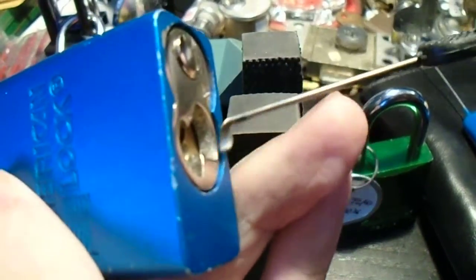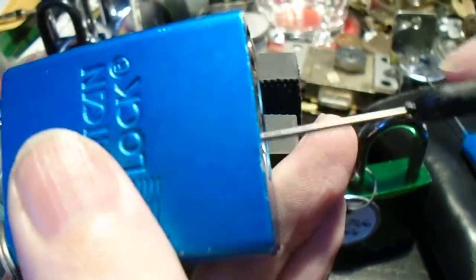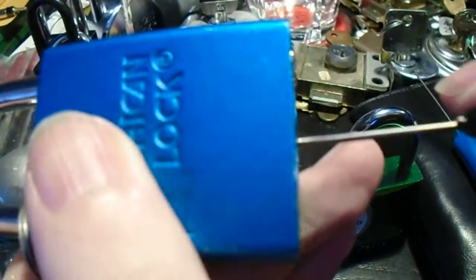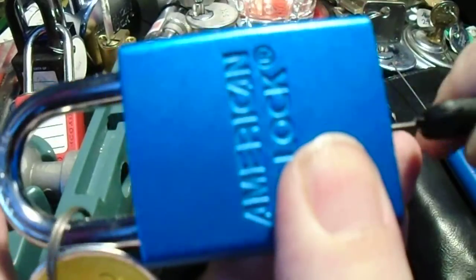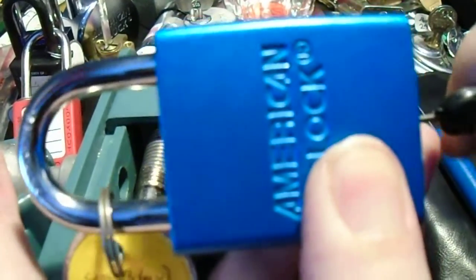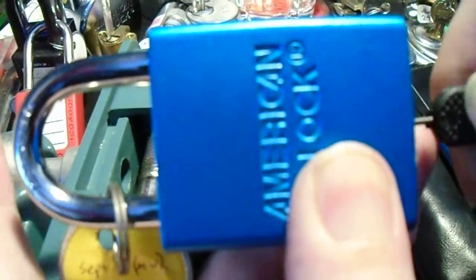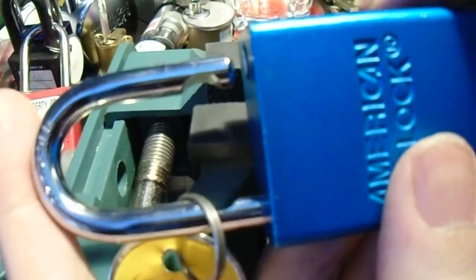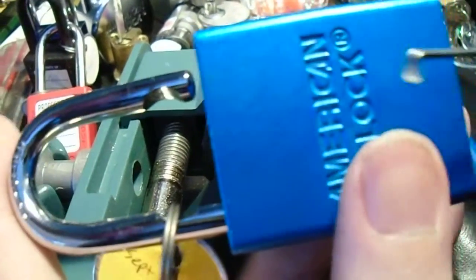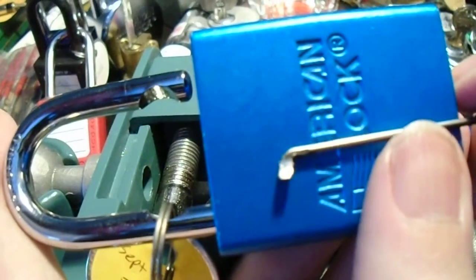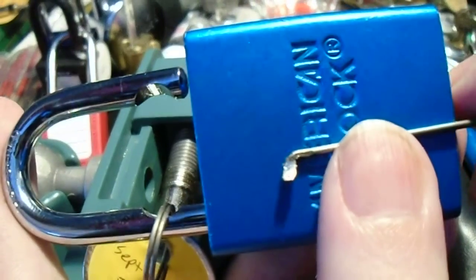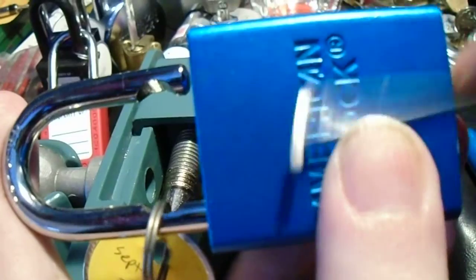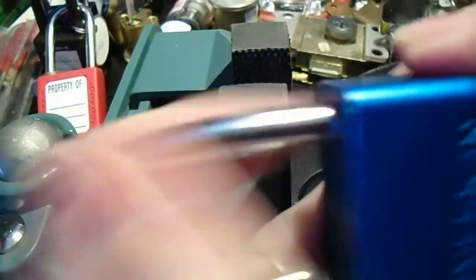and it works by taking an American Lock, inserting this tool down the keyway, and then you just sort of work it in. When you can get it deep enough, you just sort of twist it around, and it will pop the shackle open, because it can reach through the actual lock cylinder and directly attack the latching mechanism that keeps the lock closed.